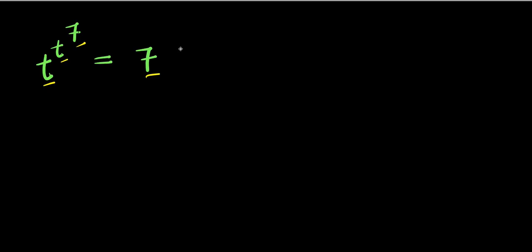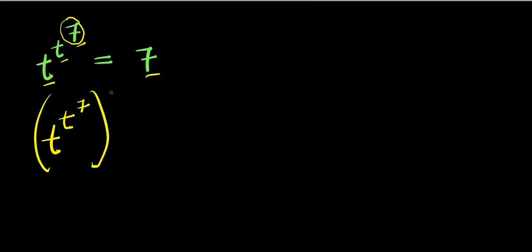In this first method, what we are going to do will be to raise each part of this equation to the power of seven, because we have seven here already. So I will have t^(t^7) raised to the power of seven, and this equals seven to the power of seven.